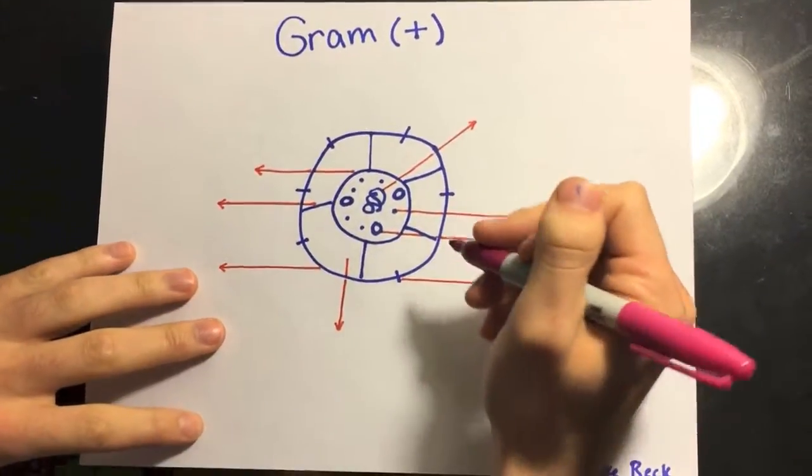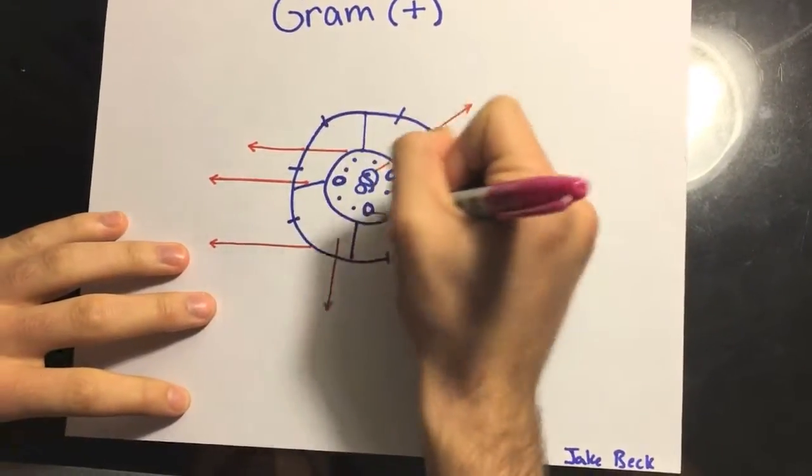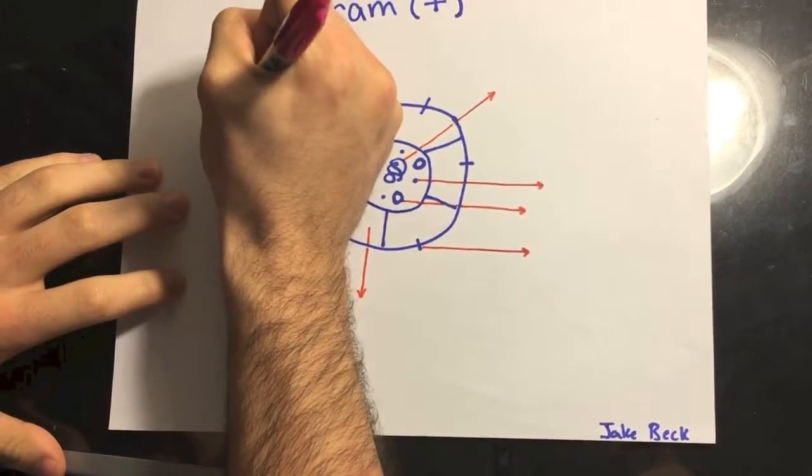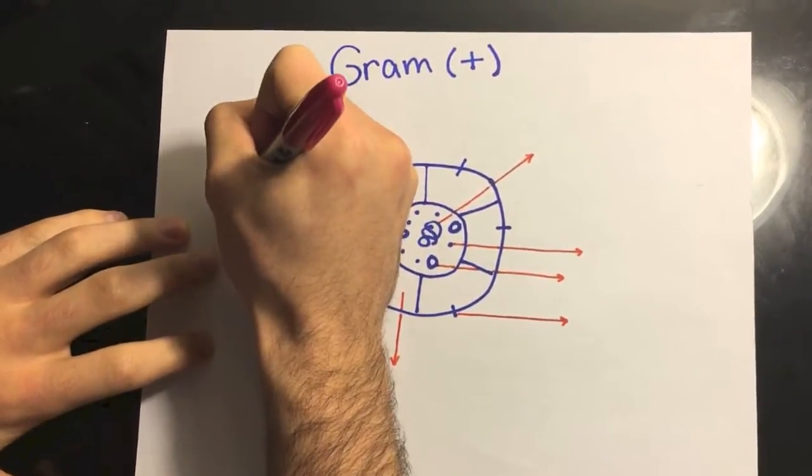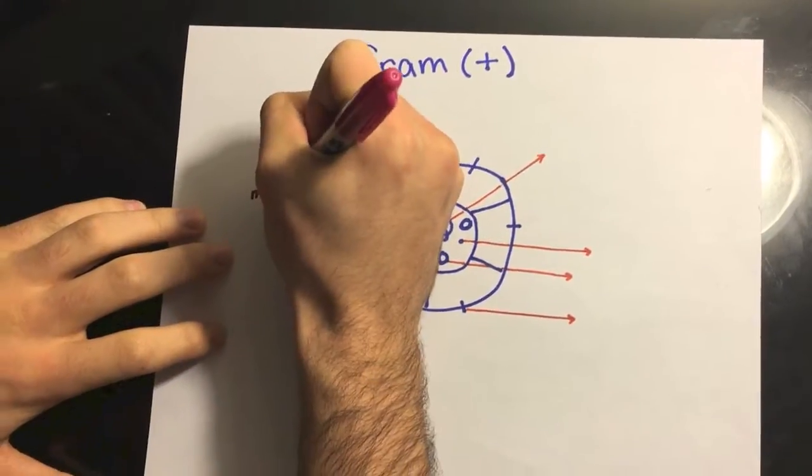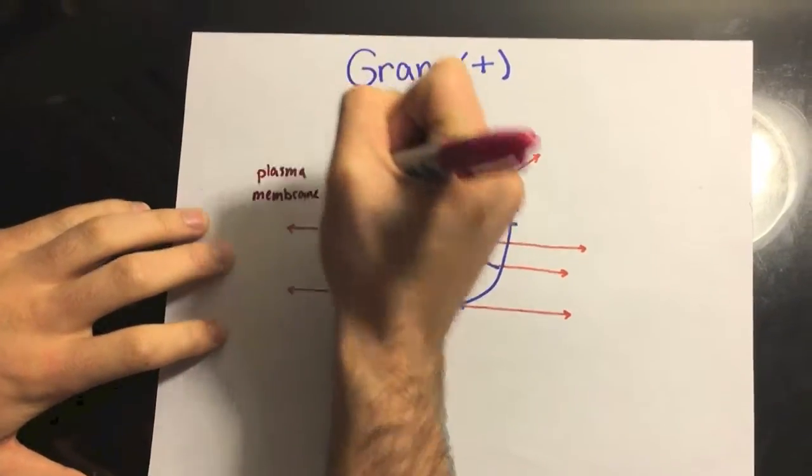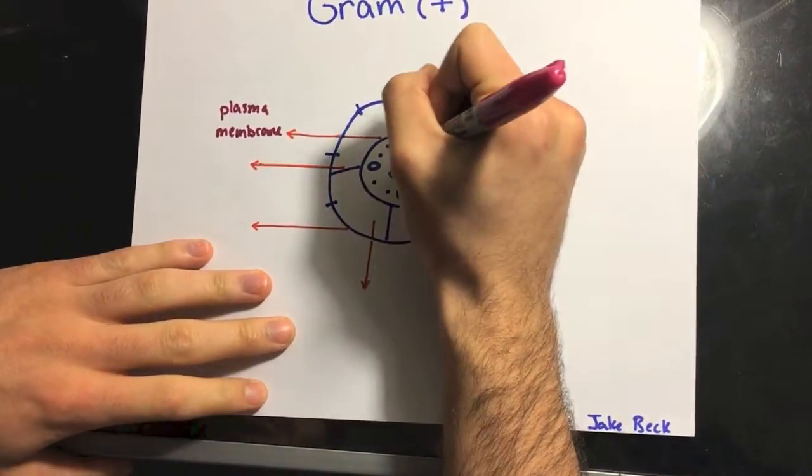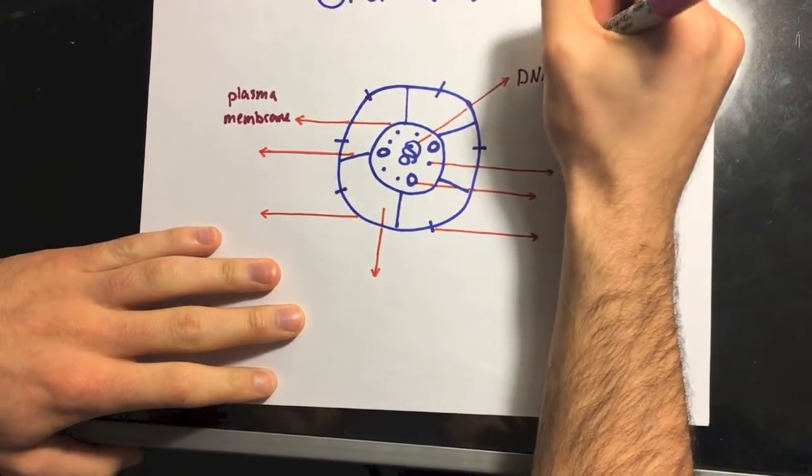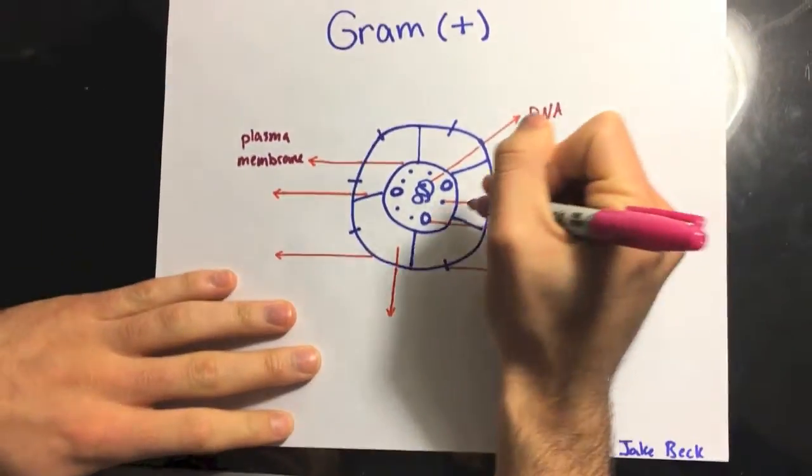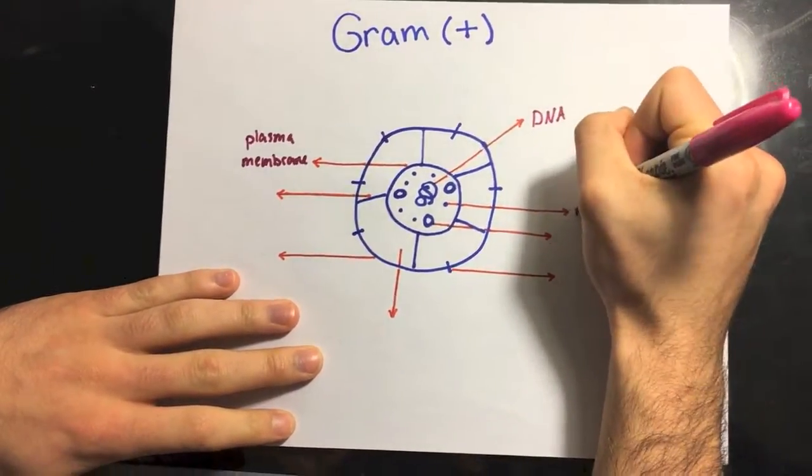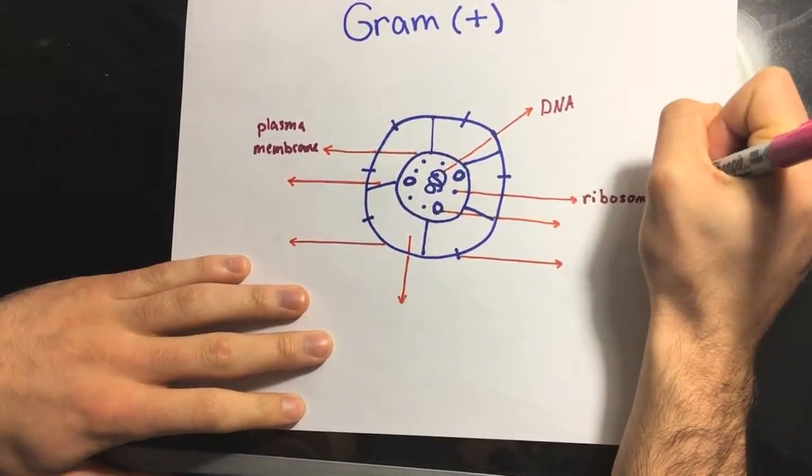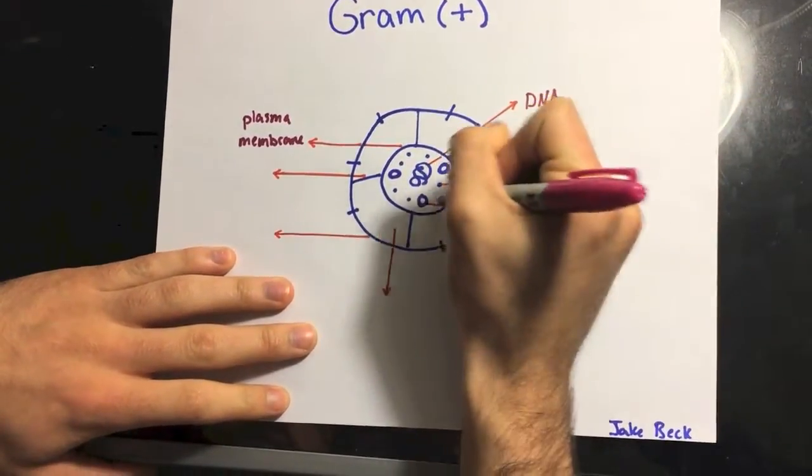So this is the gram-positive cell. First, I'd start off with the plasma membrane, then I would draw the DNA with the ribosomes and inclusion bodies.